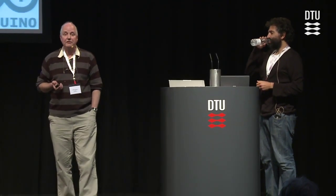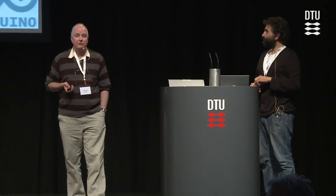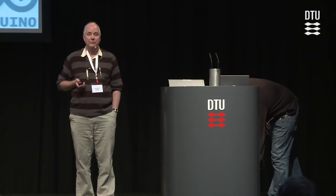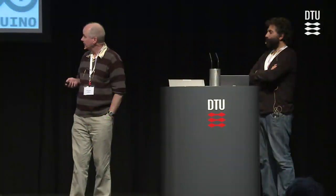Now let's look at giving things away. The idea of giving away your primary product is something that's been around in the software industry for a long time. You never paid for a search on Google, yet Google is one of the world's biggest companies — it makes a great deal of money by giving away its primary product. Linux is completely free; anybody can have a copy of the Linux operating system. Firefox, the web browser, again completely free. But all these organizations make money by doing things on the side of giving away their primary product.